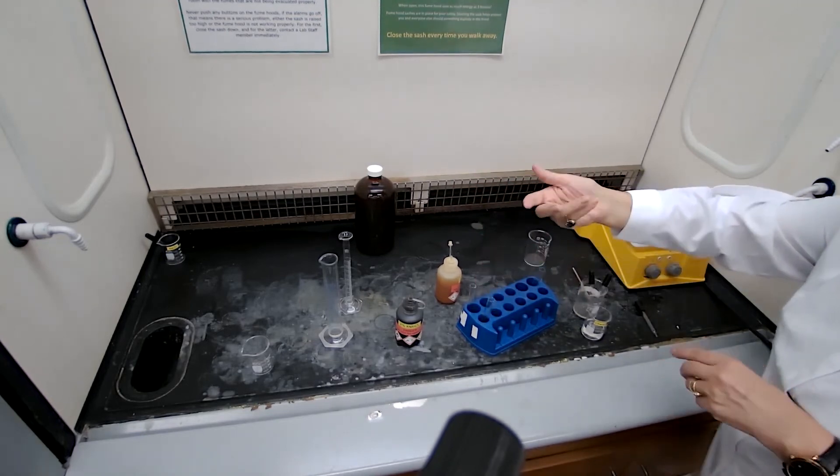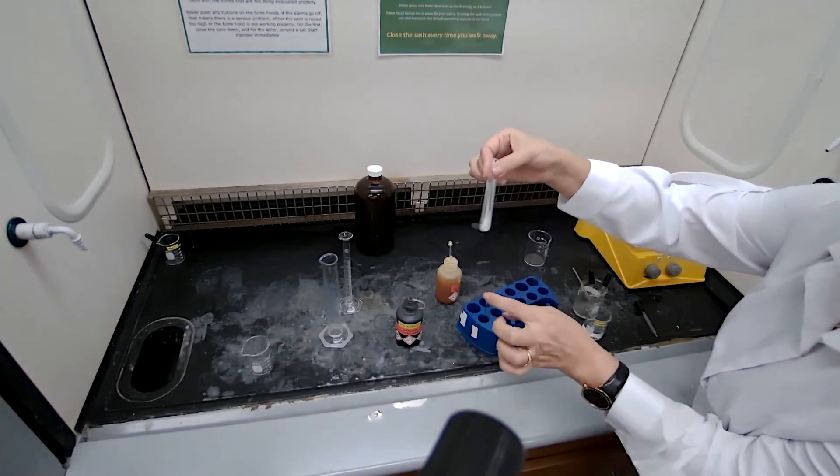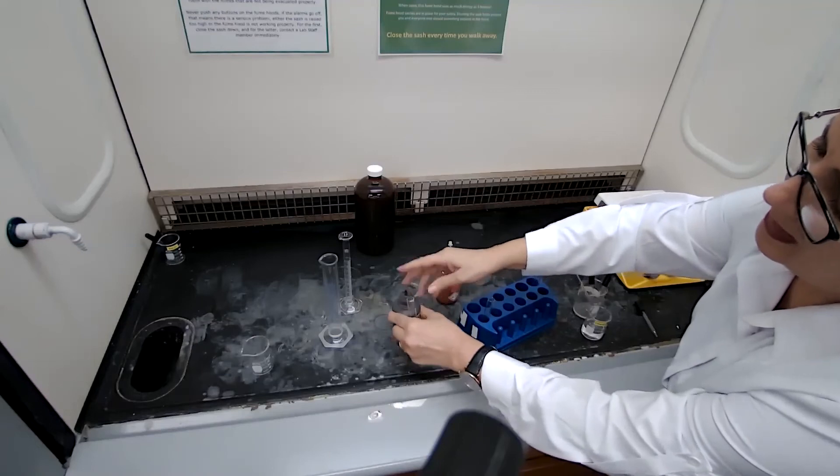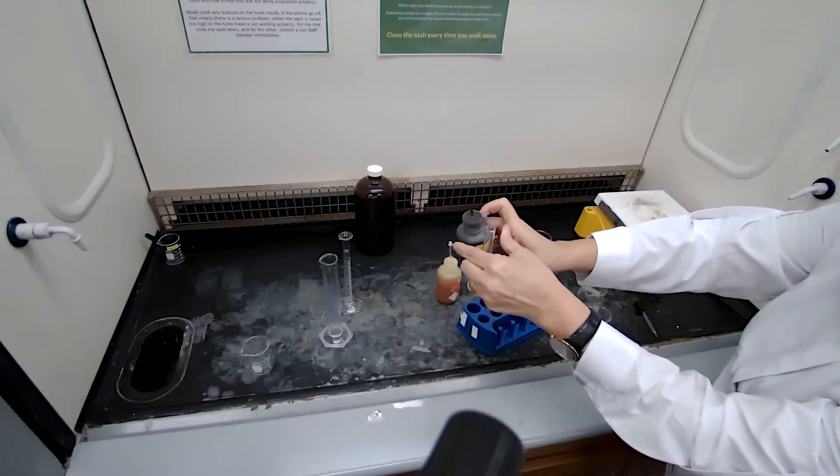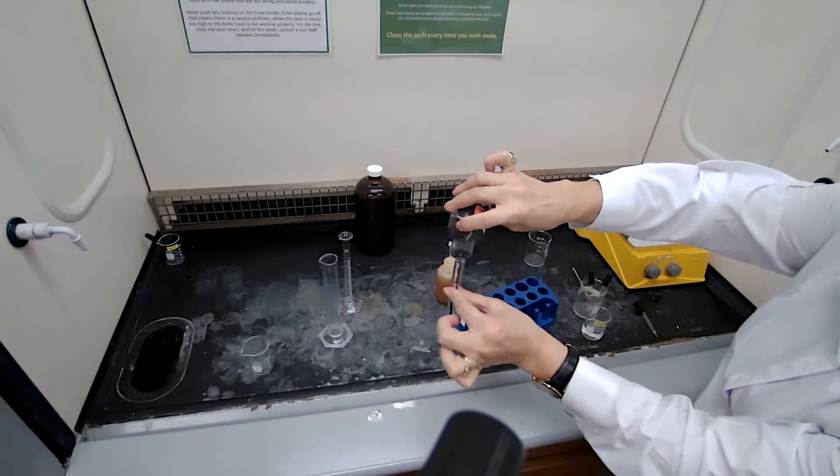The other test that you want to do is to, after the sample is dissolved in ethanol, is adding permanganate. Permanganate reacts with the double bond.